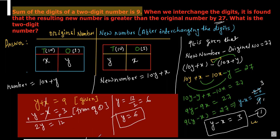Now substituting y equals 6 into x plus y equals 9: x plus 6 equals 9, so x equals 3. Therefore the original number is 36. This is your required answer.